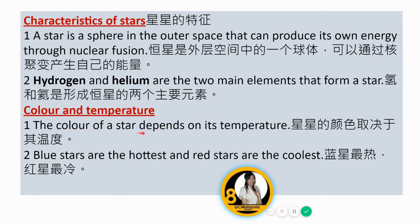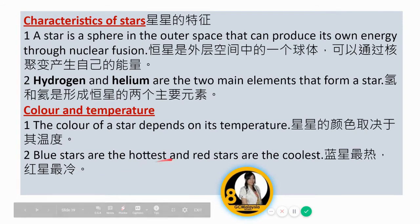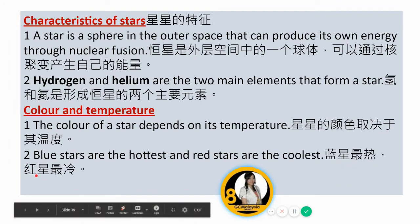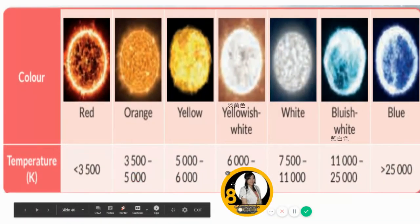The colour of a star depends on its temperature. Blue stars are the hottest and red stars are the coolest, followed by white, yellow-white, yellow, orange, and red.